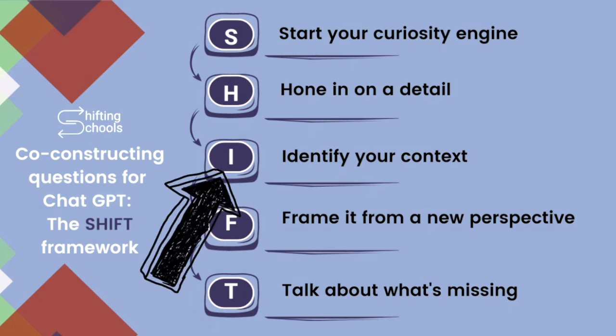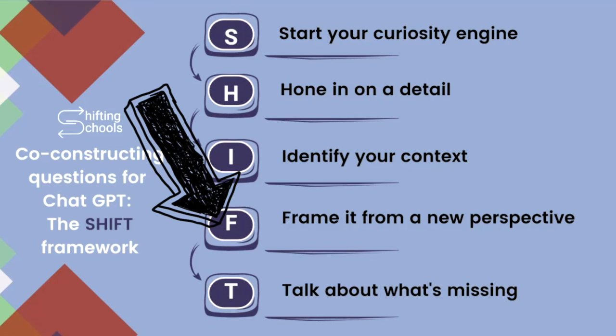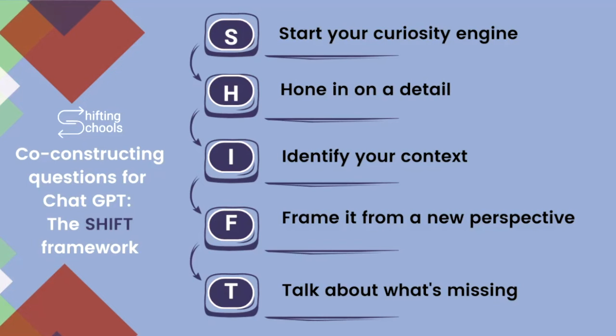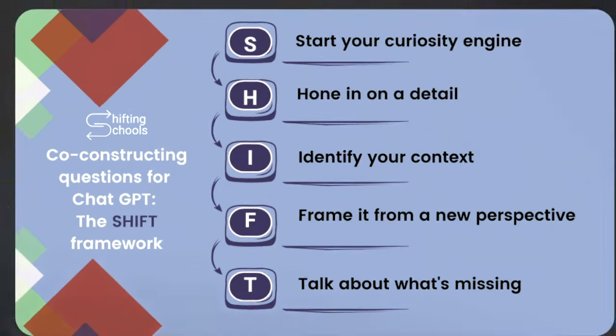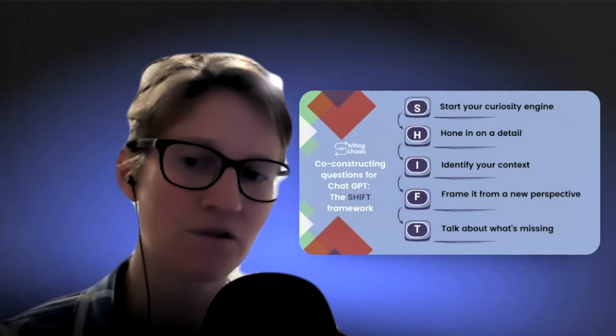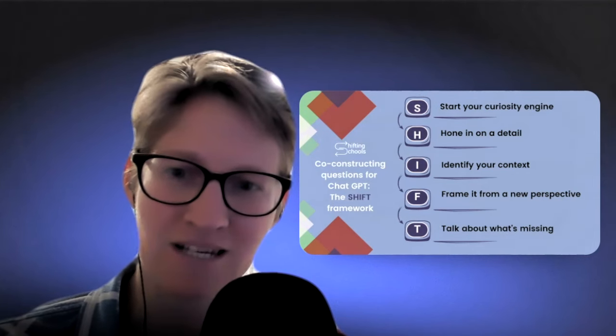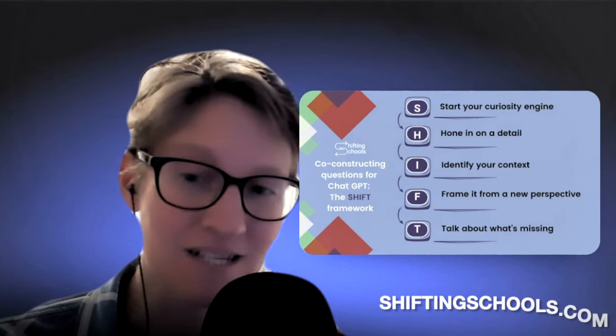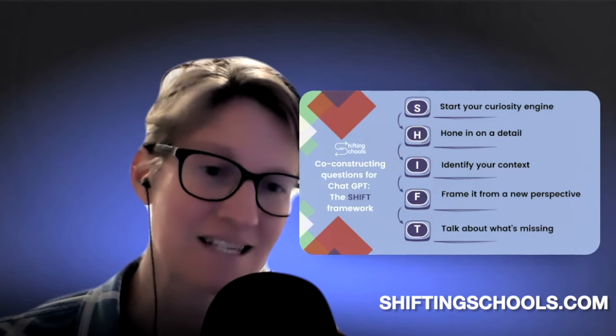The I is asking you to identify your context. The F is to frame your prompt from a new perspective. And then lastly, it's coming together as a class or as a small group and thinking about what's missing — what is it that ChatGPT needs us to do that's a uniquely human frame of question asking, of interrogating, of providing analysis, of doing that synthesis.